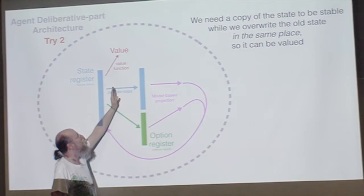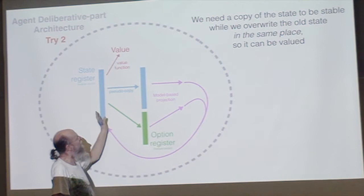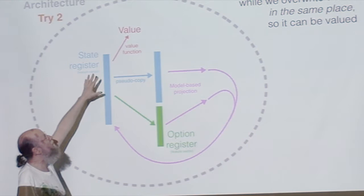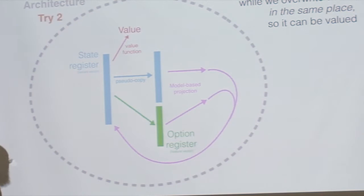From this latched thing, we can use our model to project forward and we can stick the result safely in the original register. This guy is latched, so we just go forward and we change this guy and that will not be changing anything else. So then we have the new state in the state register, the primary state register, and then we can apply the value function again.